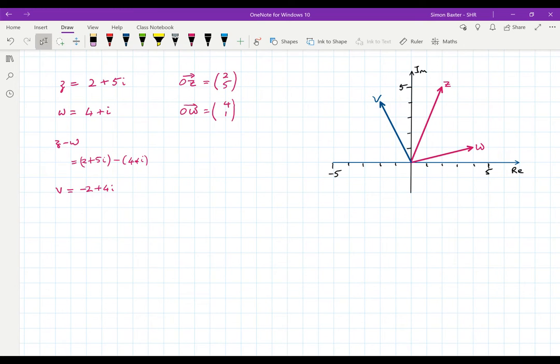I've drawn this on the diagram and I've called it the complex number V. Well let's do the same thing with vectors. Let's look at the vector WZ. We should all know that that is the vector OZ minus the vector OW. Well OZ is the vector 2, 5. And when I subtract one from the other I get minus 2, 4. And that is the vector WZ.